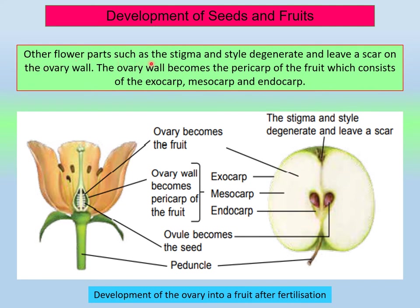Other flower parts such as the stigma and style degenerate and leave a scar on the ovary walls. The ovary walls become the pericarp of the fruit, which consists of exocarp, mesocarp and endocarp. The exocarp is the outer layer of the fruit, the mesocarp is the middle part, and the endocarp is the inner part of the fruit.